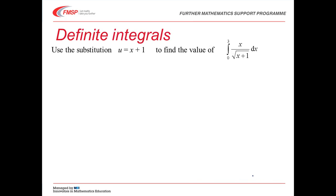How do we deal with definite integrals? We could substitute back in for u and then continue with the limits in the usual way. However, if we change the limits to be in terms of u as well, then we don't need to bother with the fourth step of going back into x — we can work entirely in terms of u.